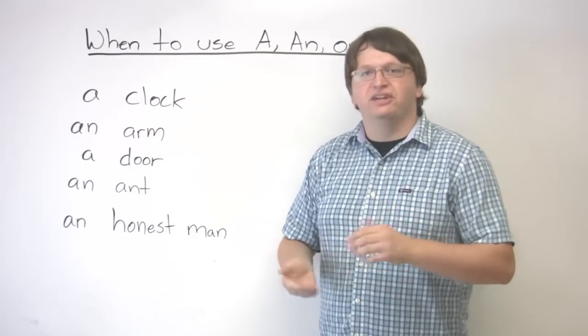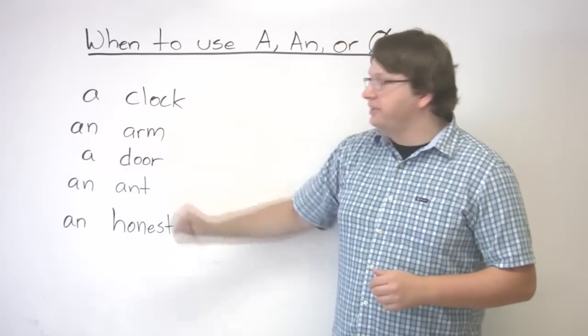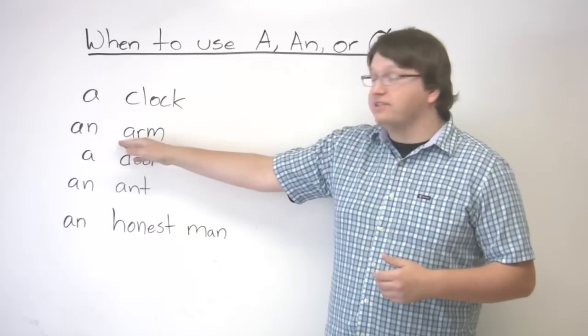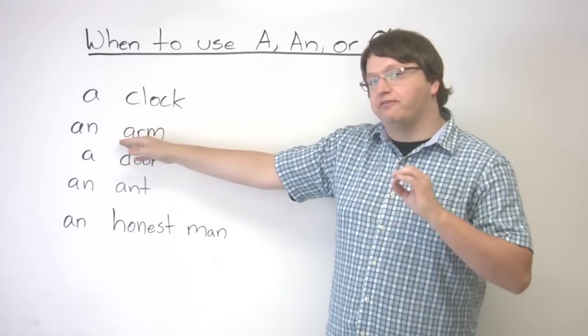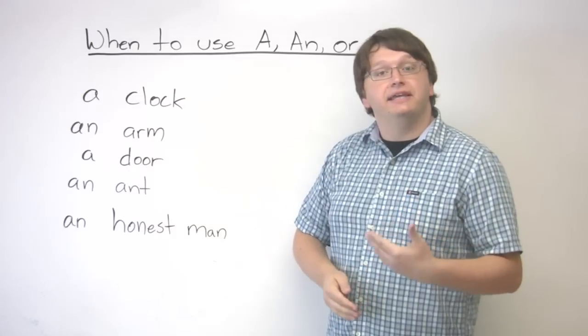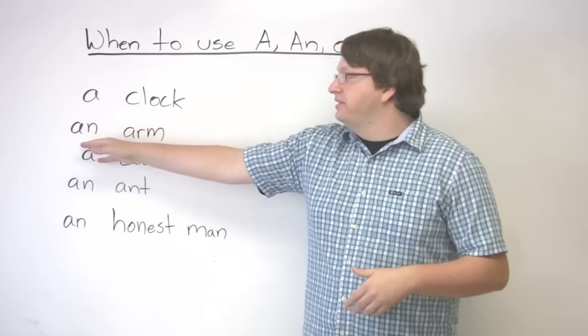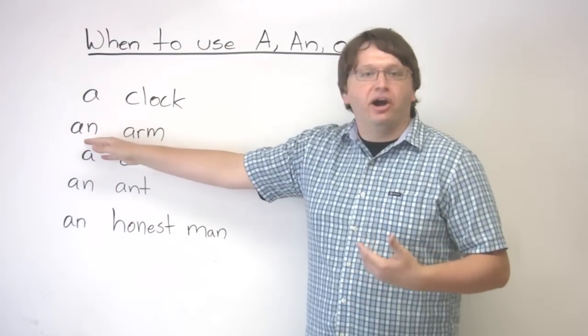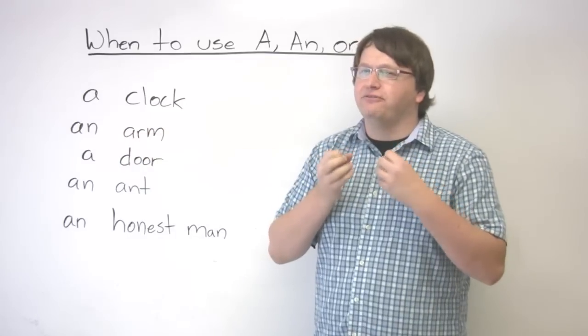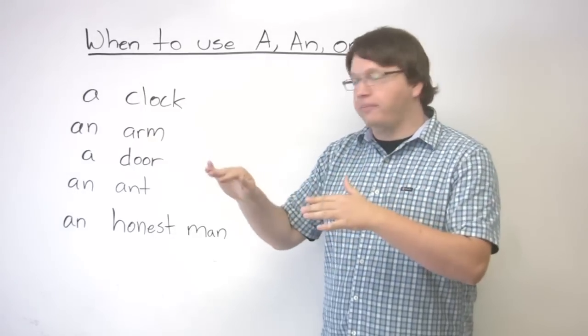So either a k, g, b, n, those kinds of sounds. Here we have an arm. We use an because this is a vowel sound. So for vowel sounds, words that begin with vowel sounds like a, e, i, o, u, we have to use an, because if we say a arm, it sounds very, very awkward. It does not sound correct. So an arm, okay?